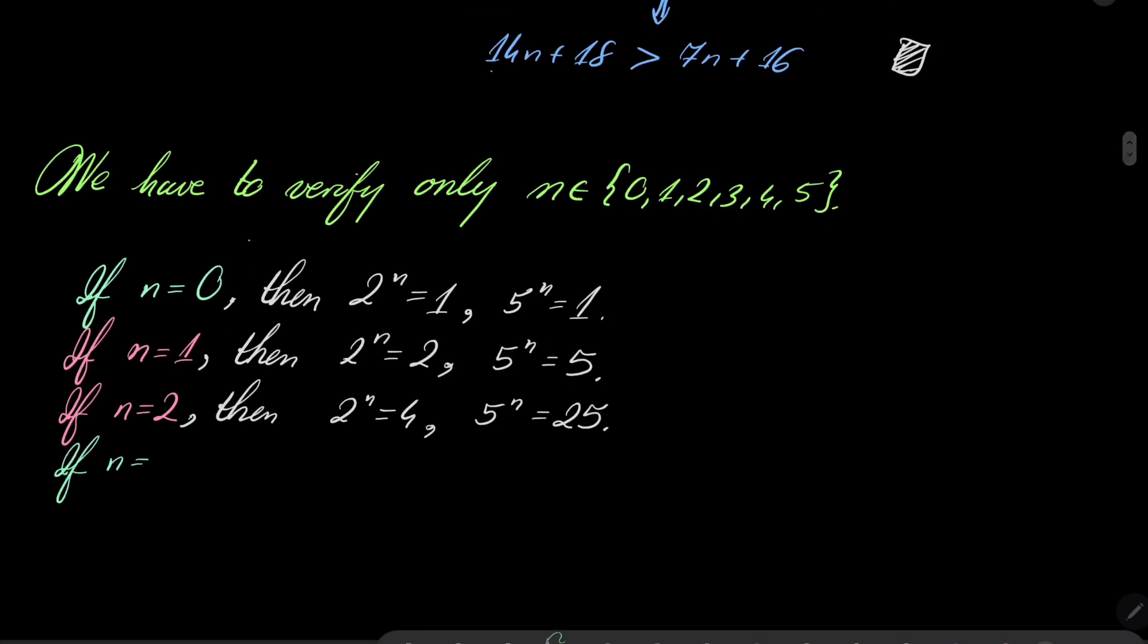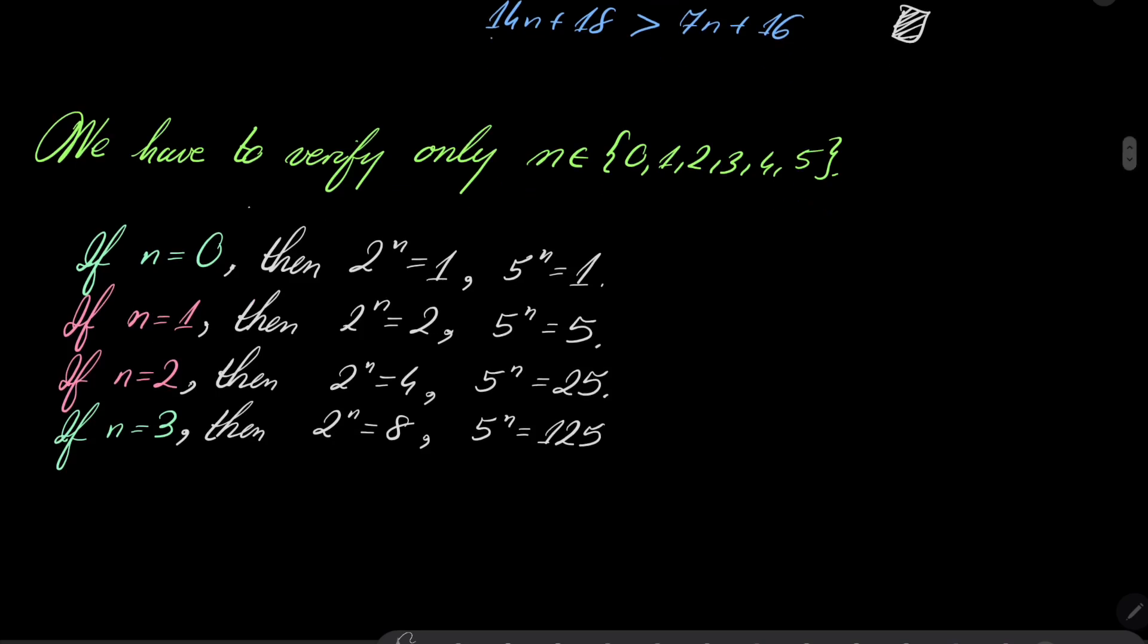If n equals 3, then 2 to the power of n is 8, 5 to the power of n is 125, and notice that 1 plus 2 plus 5, the sum of digits, equals 8. So we have found another solution.